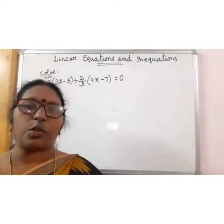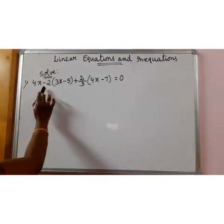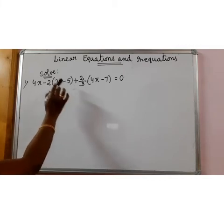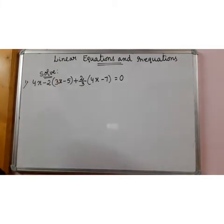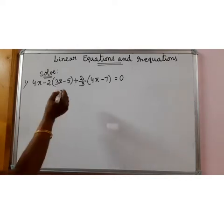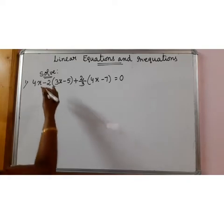Today you are going to learn little more complicated ones. Your first question is 4x minus 2 into 3x minus 5 plus 2 by 3 into 4x minus 7 is equal to 0. Here the variable is x. How to solve it? Let us learn.